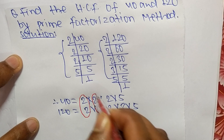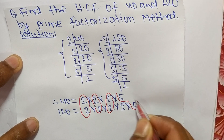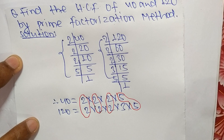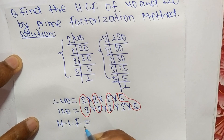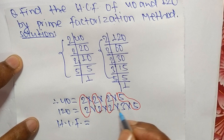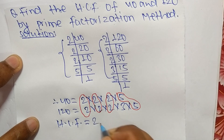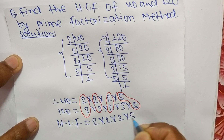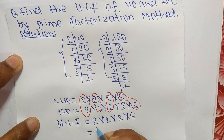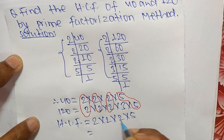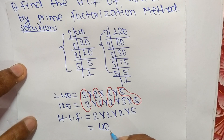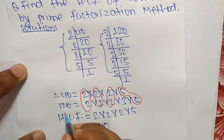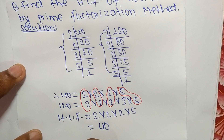The common factors are 2, 2, 2, and 5. So the HCF is equal to the product of these common factors: 2 times 2 equals 4, 4 times 2 equals 8, and 8 times 5 equals 40. So 40 is the HCF of 40 and 120.